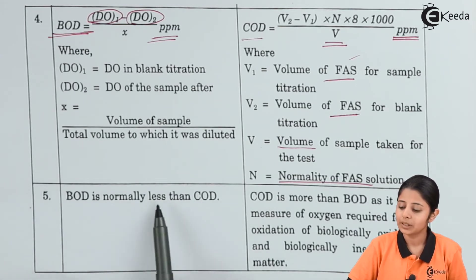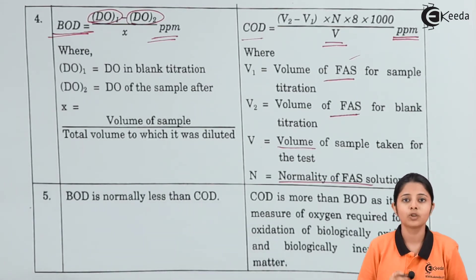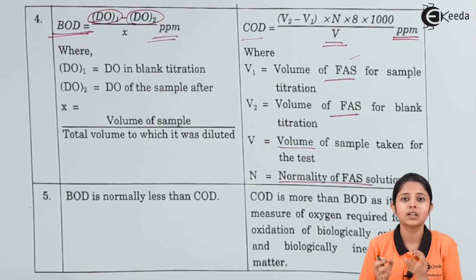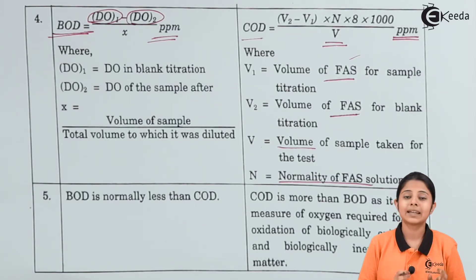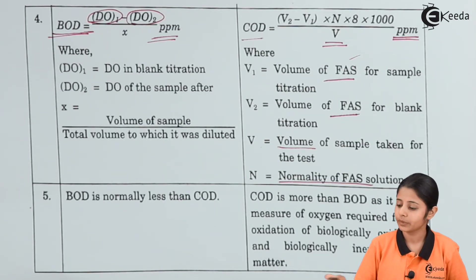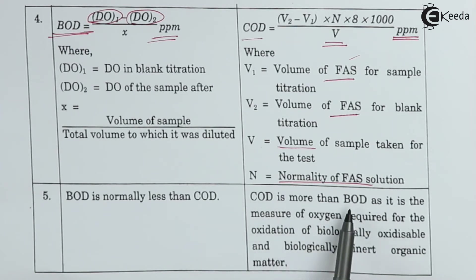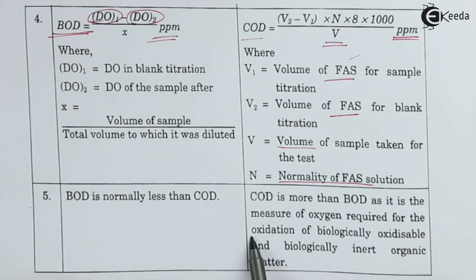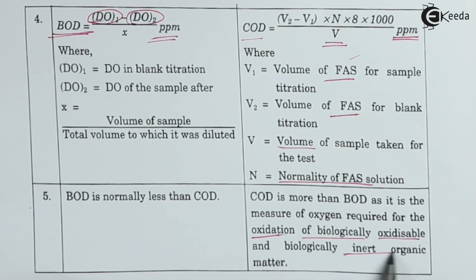Point number 5: BOD is normally less than COD because the amount of bacteria present in the water is generally less than the amount of chemicals present in water. The word 'generally' is used here because it depends from water sample to water sample. COD is more than BOD as it measures the oxygen required for the oxidation of both biologically oxidizable and biologically inert organic matter. COD talks about all kinds of organic matter, while BOD talks about all kinds of biological matter.